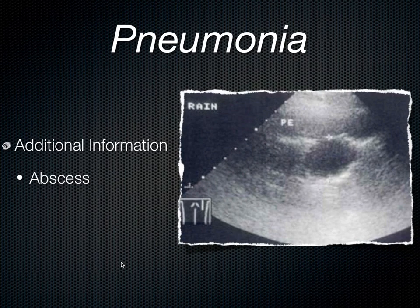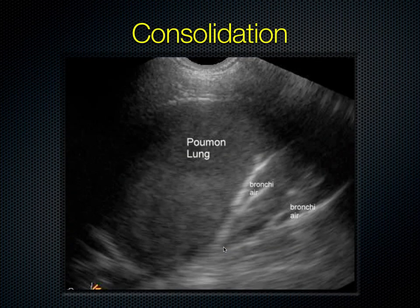Ultrasound has also been used to identify abscess within the lung — it's usually very circumscribed and discrete, sometimes with fibrin or exudate in the dependent area. Here's a great example from one of our French-Canadian colleagues showing the air bronchogram and the bronchial tree visible within the lung.